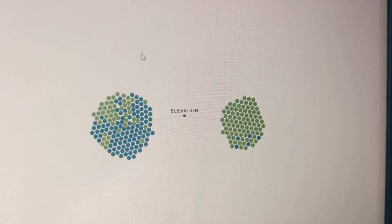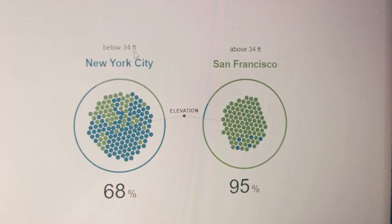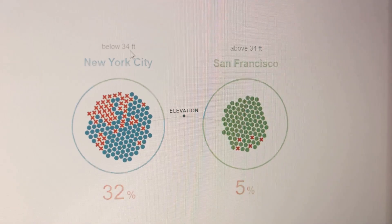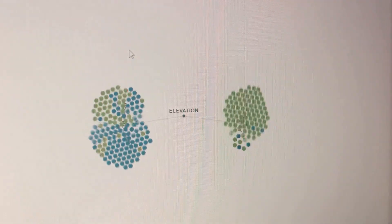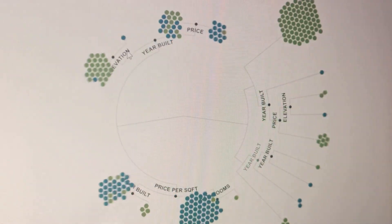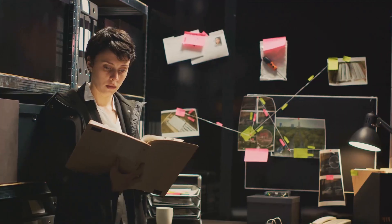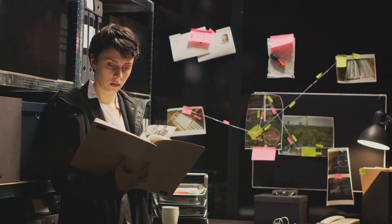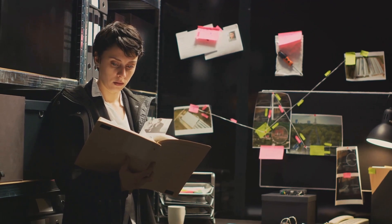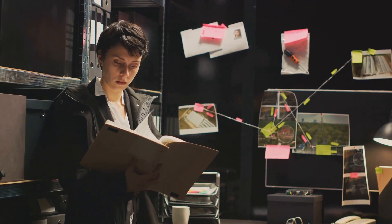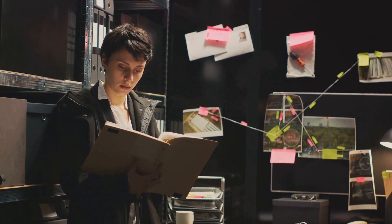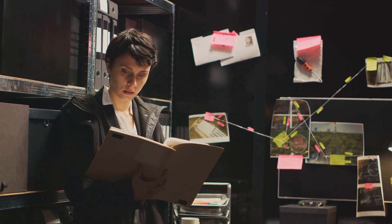Statistical modeling, on the other hand, is more about understanding and explaining the present or past. It's like a historian, piecing together the story of the data, understanding why things are the way they are.